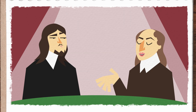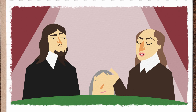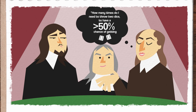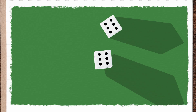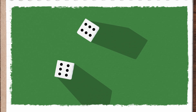For instance, the French writer Antoine Gumbu posed the following question to the great mathematician Blaise Pascal, who later made sure it caught the attention of Pierre de Fermat: how many times do I need to throw two dice to have a greater than 50% chance of getting two sixes? That question is a little hard to follow, but the easy answer is once — if you use loaded dice.